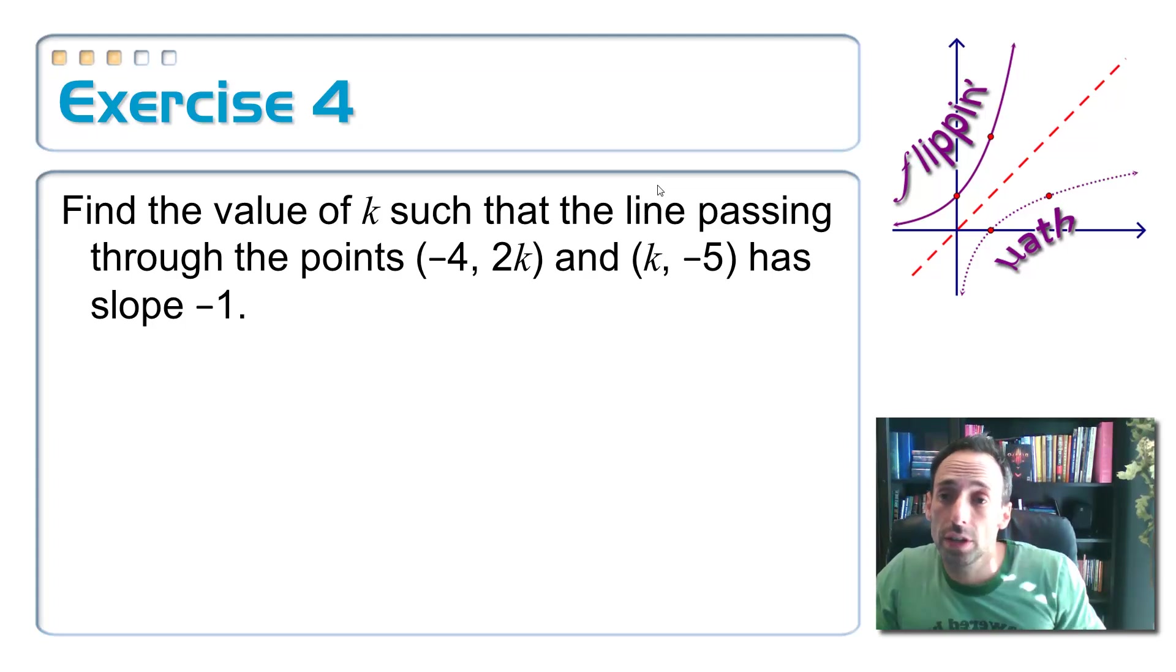Last exercise for this video. Find the value of k such that the line passing through these 2 points, look, I've got some missing coordinates there, has a slope of negative 1. So, the way that we're going to do this is that we just set it up as in I'm going to find the slope between these 2 points, just pretending like nothing's wrong, and then at the end, set it equal to negative 1, and then finally solve for k.